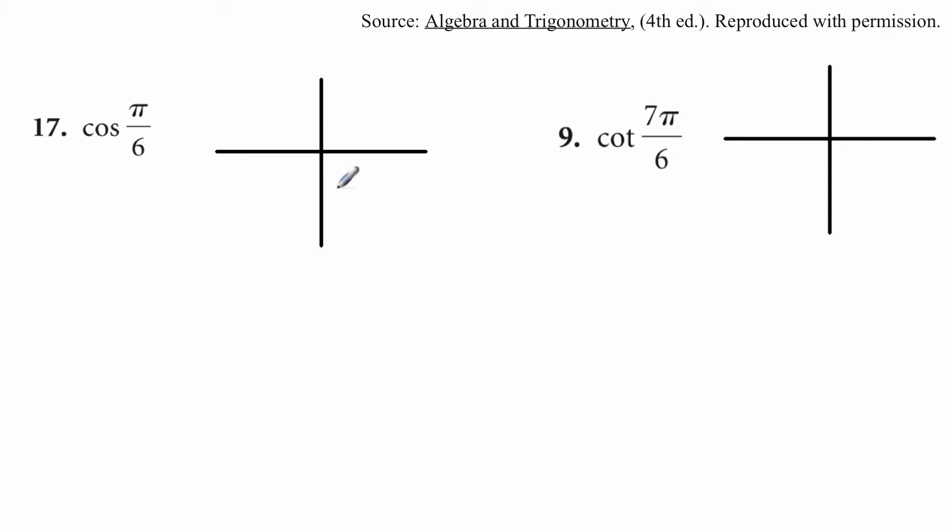First off, if you can think in radians, that's good. Sometimes people have to convert to degrees. I like converting to degrees. The cosine of π over 6 radians is the same thing as the cosine of 30 degrees. So 30 degrees is right about there. They want to know the function value of that. The cosine of 30 degrees off that chart that they have in the textbook is the cosine of 30 is root 3 over 2.